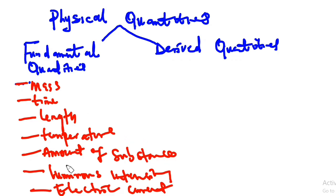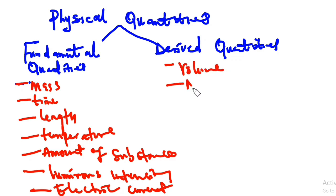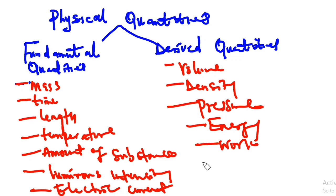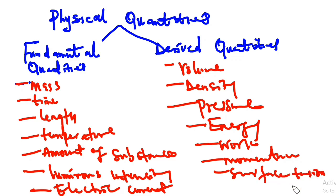Any other quantity aside from these seven are derived quantities. For instance, you have volume, density, pressure, energy, work, momentum, surface tension, and so on. So these are derived quantities.